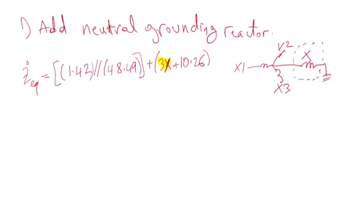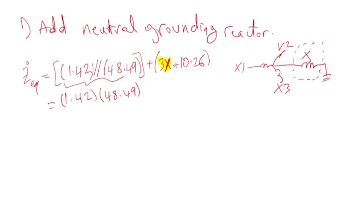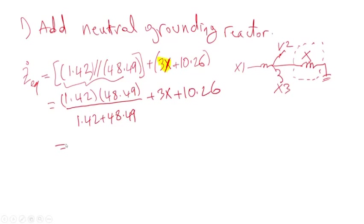What I added is three times the reactance of the neutral grounding reactor. Now I can simplify this — the two impedances in parallel is just the product of the two divided by their sum, plus 3X plus 10.26%. Simplifying further, you get 11.64 plus 3 times X.